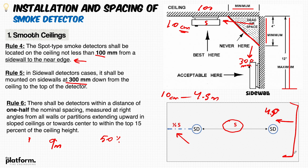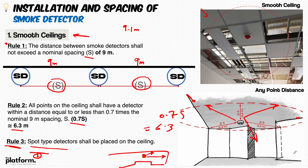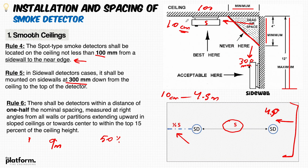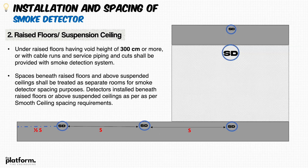To summarize the six rules for smooth ceilings: Rule 1 — nominal spacing between smoke detectors shall not exceed nine meters. Rule 2 — any point on the ceiling must be within 0.7 times the nominal spacing (6.3 m) of a detector. Rule 3 — detectors shall be surface-mounted on the ceiling; if recessed installation is needed, use listed and approved devices. Rule 4 — minimum 100 mm from the wall horizontally; 300 mm if side-wall mounted. Rule 6 — smoke detector to wall distance: maximum half the nominal spacing, i.e., 4.5 meters.